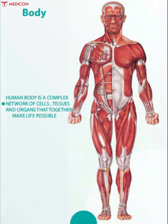The human body is a complex network of cells, tissues, and organs that together make life possible. There are 10 major systems responsible for the body's function. They are the skeletal system, muscular system, cardiovascular system, nervous system, endocrine system, lymphatic system, respiratory system, digestive system, urinary system, and reproductive system.